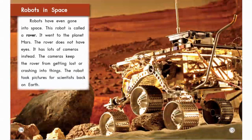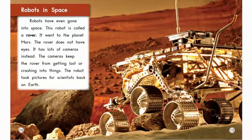Page fourteen — on the left-hand side: 'Robots have even gone into space. This robot is called a rover.' Can you say that word — 'rover'? How many syllables do you hear? Ro-ver — two syllables. Find that word 'rover' and run your finger under it. It's in bold print, so it's a little bit easier to find.